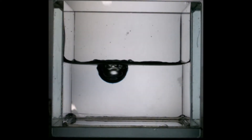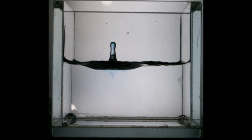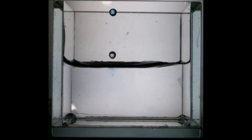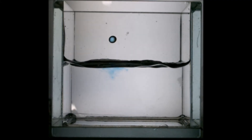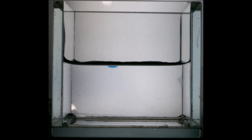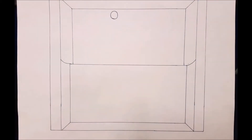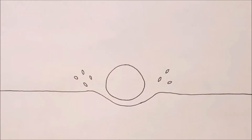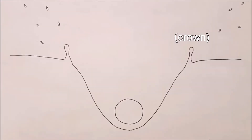When the droplet falls and hits the surface of the liquid, a small cushion of air gets trapped between the water droplet and the surface. While the droplet loses kinetic energy, it forms a crater in the liquid. There is now a larger water-air interface.